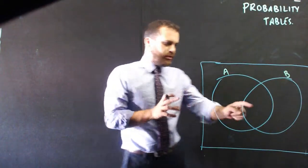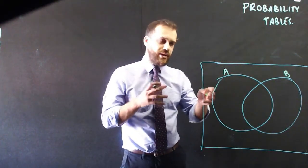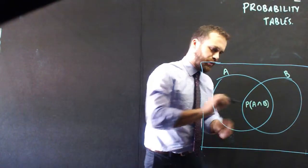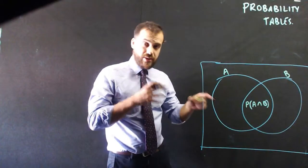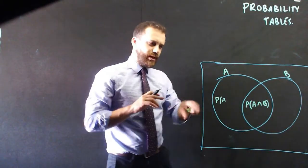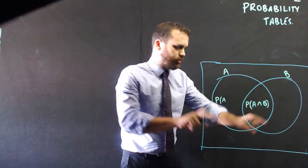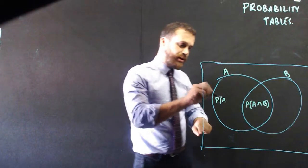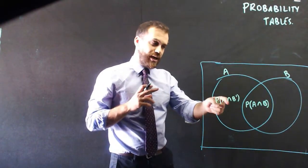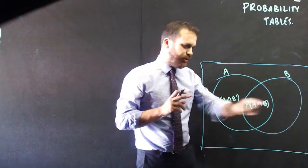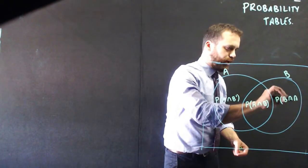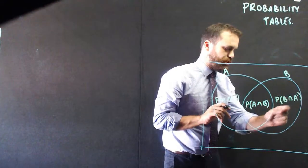If I work from the middle, this middle section here represents people in set A and set B — the probability that A happens and the probability that B happens. We can use our set notation: A intersection B, A and B. Now, this bit here — a lot of people would be tempted to say it's just the probability of A, but that's not true, because this whole circle is the probability of A. This is the probability of A and not B, meaning the probability that A happens and B doesn't. Similarly, this bit here is the probability that B happens and A doesn't.